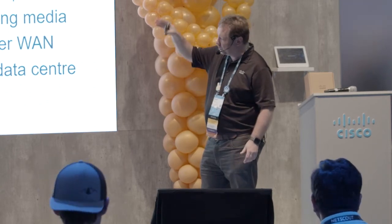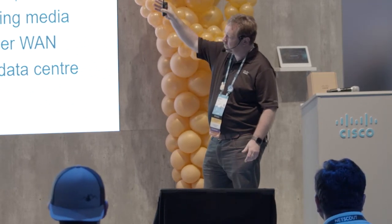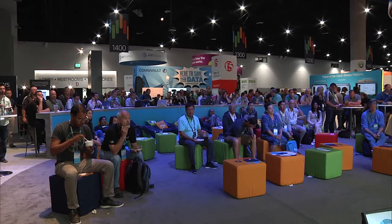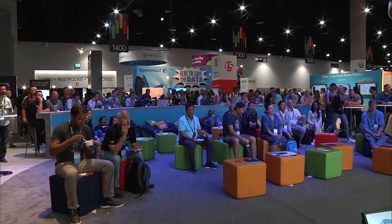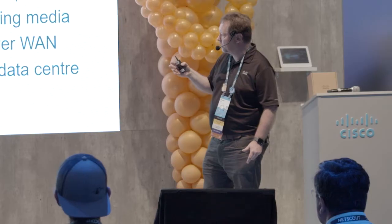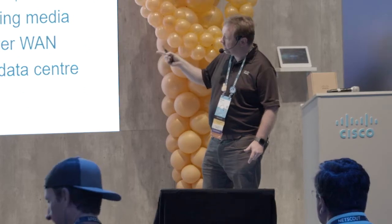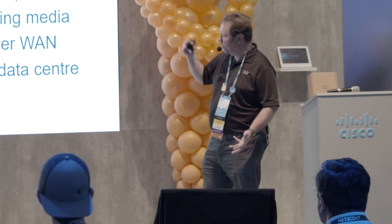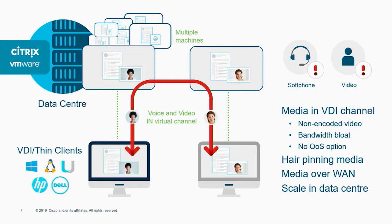You're actually going to have bandwidth bloat because compressed video may be uncompressed within that channel. And obviously, if that traffic is within the VDI channel, you've got no options for delivering QoS against that. So basically, we've got hairpinning, we've got the media traffic there, and we've also got the scaling issues within the data center.